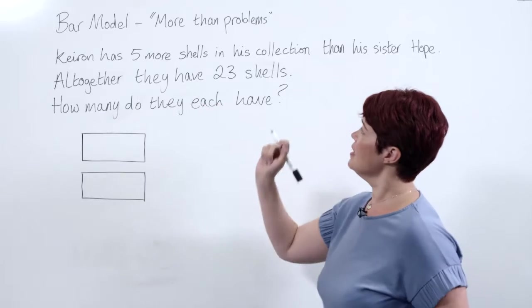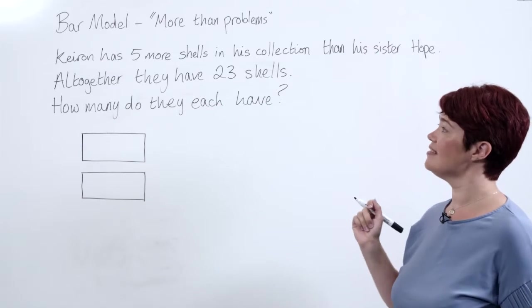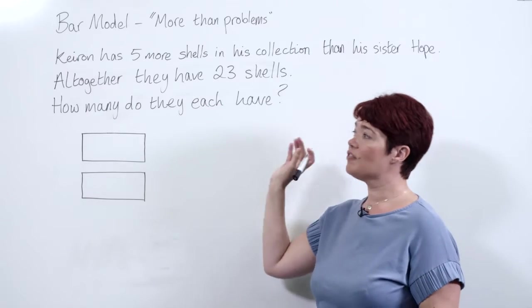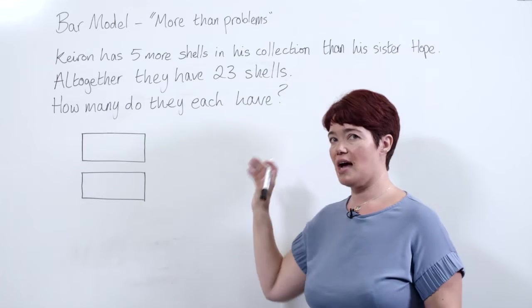Here's our problem. Kieran has five more shells in his collection than his sister Hope. Altogether they have 23 shells. How many do they each have?